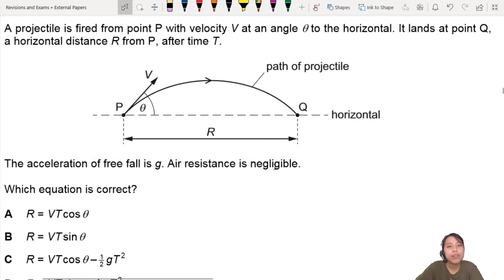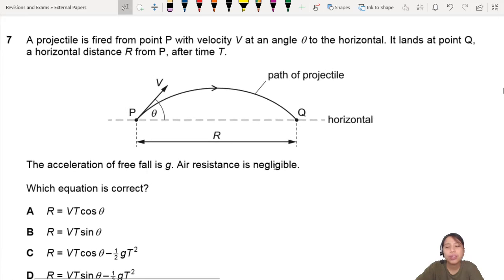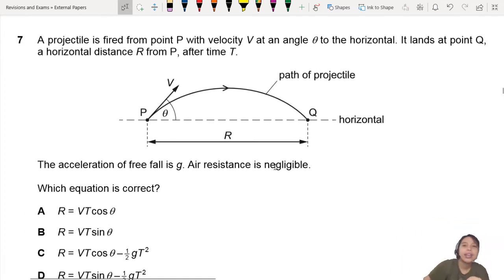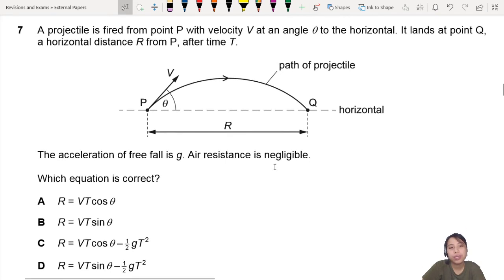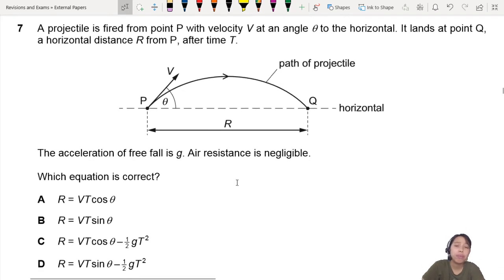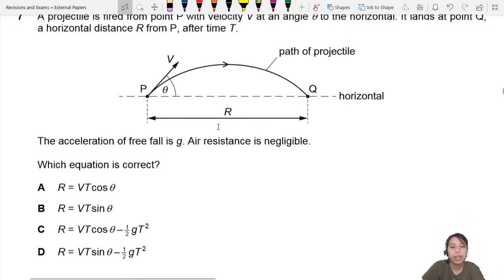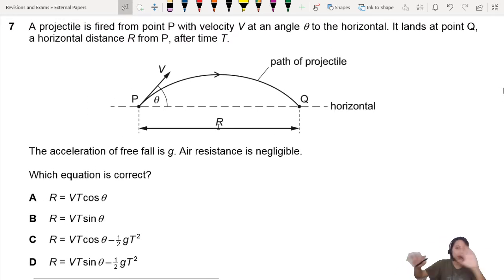A projectile is fired from point P with velocity V at an angle to the horizontal. It lands at point Q, a horizontal distance R from P after a certain time. So we have this thing. And they ask you, which equation is correct?